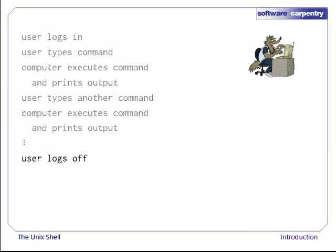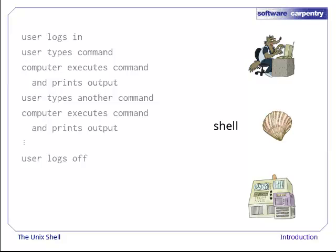From this description, you'd think that the user was sending commands directly to the computer, and that the computer was sending output directly to the user. In fact, there's a program in between called a command shell. What the user types goes into the shell, which figures out what commands to run, and orders the computer to execute them. The computer then sends the output of those programs back to the shell, which takes care of displaying things to the user.